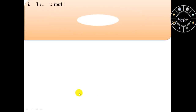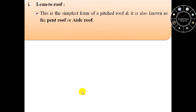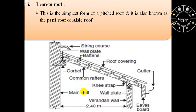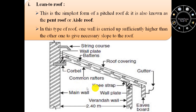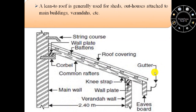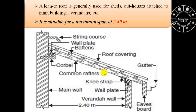The lean to roof is the simplest form of pitch roof and it is also known as pent roof or aisle roof. One wall is carried up sufficiently higher than the other one to give the necessary slope to the roof. A lean to roof is generally used for sheds, outhouses attached to main buildings, verandas, etc. This lean to roof is suitable for a maximum span of 2.40 meters.